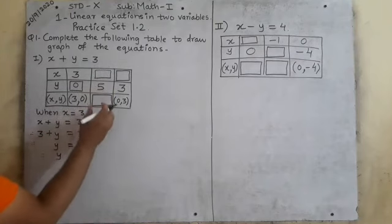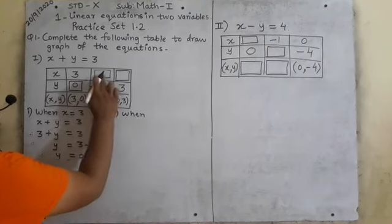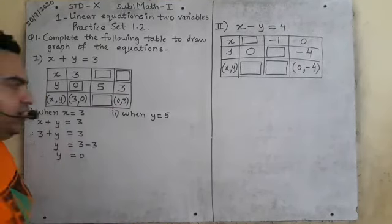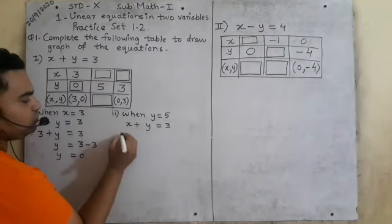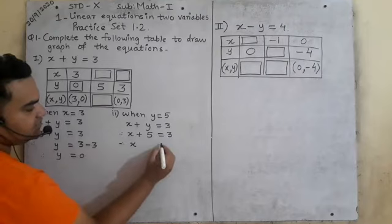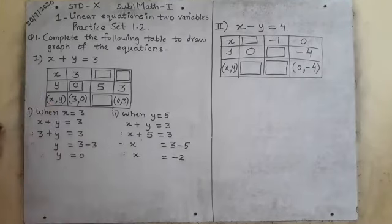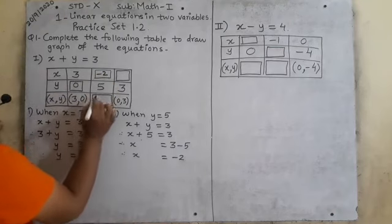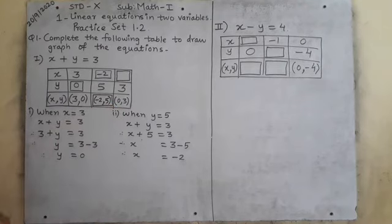Now the second column. When x is not given but y is given — y equals 5 — we have to find x. Use this equation: x plus y equals 3. So x plus 5 equals 3. This 5 will go to the right-hand side as minus, so x equals 3 minus 5, which equals minus 2. So the coordinate is minus 2 comma 5.